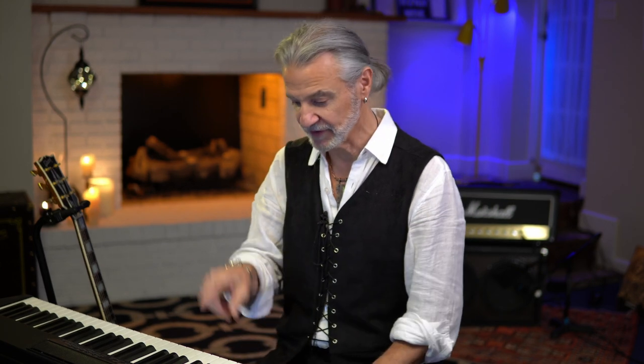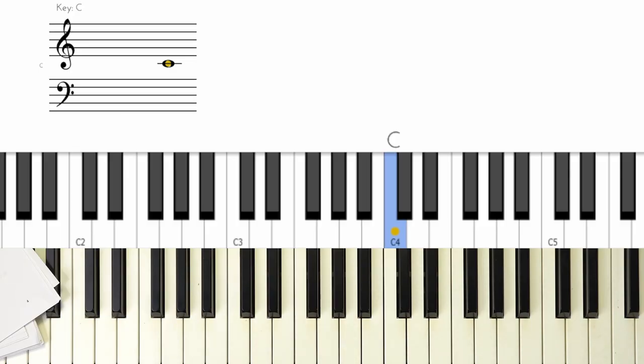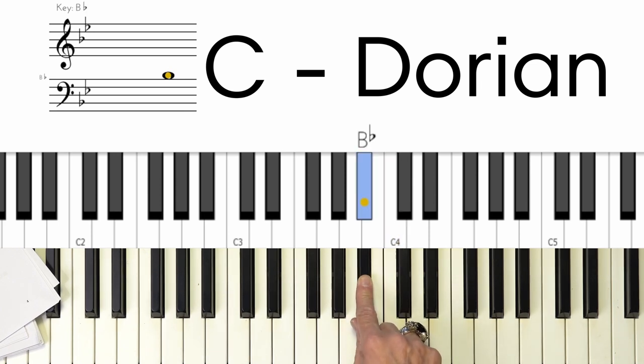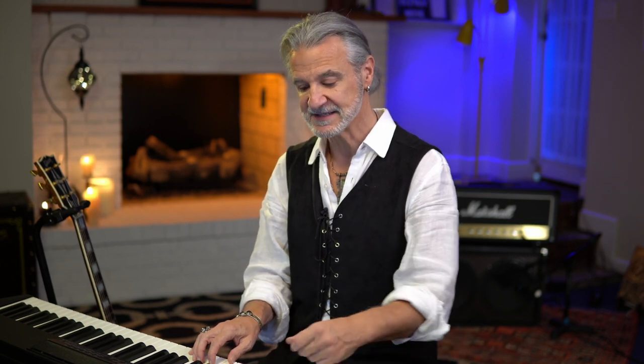Now let's go to C Dorian. We're starting with C, and since Dorian is the second mode, we ask: what scale is C the second note of? The answer is B flat. So we play C Dorian in the key signature of B flat, which has two flats — B flat and E flat. Starting on C, flatting B and E gives you C Dorian. To illustrate the color, I'm going to pedal the B flat — the tonic of the key of B flat — while playing the modal scale on top.